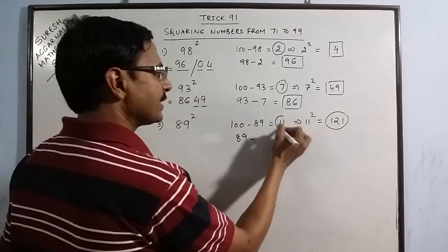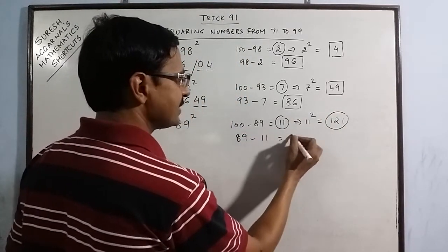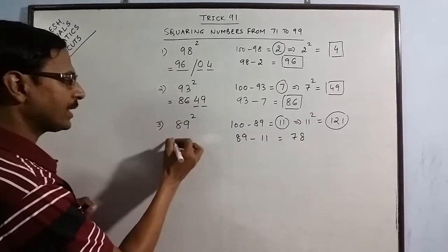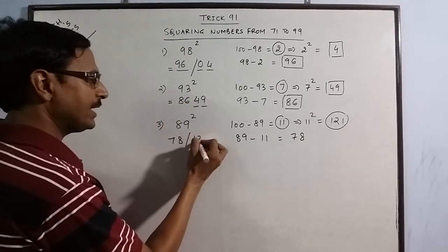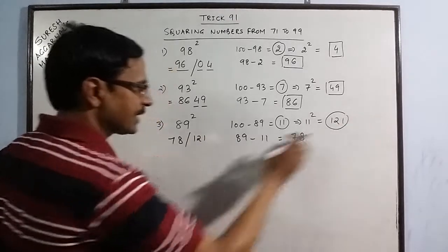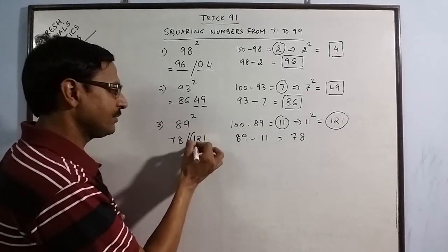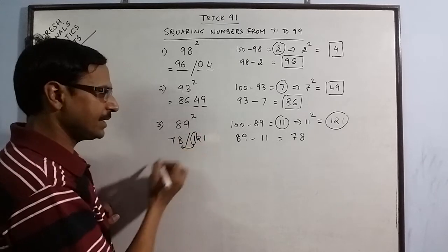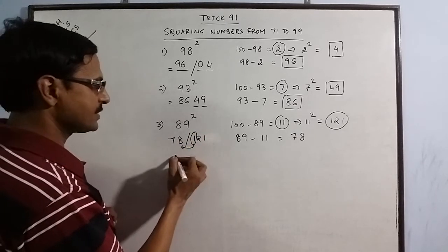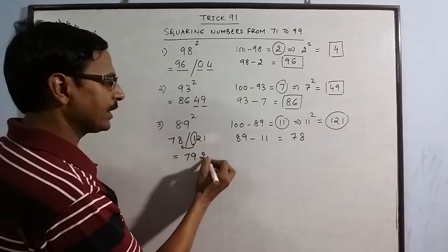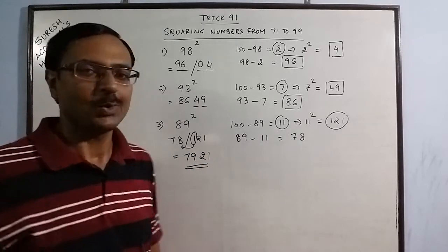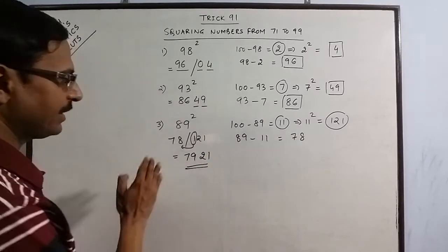Now from the number subtract this 11, you get 78. Now your answer is 78 and 121. This is the first part, this is the second part. But you cannot write a 3 digit number here. So what we do is, we carry forward this number to this side. 78 plus 1 becomes 79 and 21 retains its place. So the square of 89 is 7921.